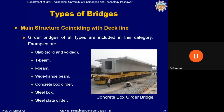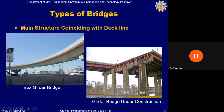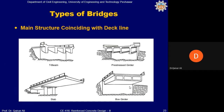The major group of bridges falls in the category where the main structure coincides with the deck line. All types of girder bridges — slab bridges, T-beam, I-beam, wide flange beam, concrete box girder, steel box, and steel plate girders — fall in this category. Pictures show a concrete box girder bridge, a girder bridge under construction with steel plate girders, T-beam, prestressed girder, slab girder, box girder, and so on.